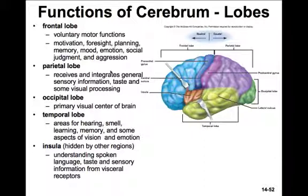While it's fresh, outline or diagram each of the different lobes of the cerebrum and identify their functions. Use the recall method — see what you can do without looking at your notes, then fill in the gaps by looking at your notes. Turn it over, cover it up, begin again. See if you can recall it all. Diagramming helps because you can add color, which will really help you key in on the information later.